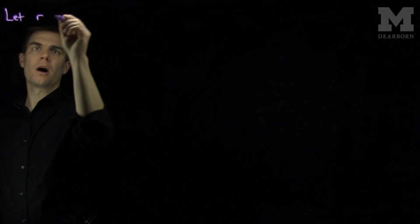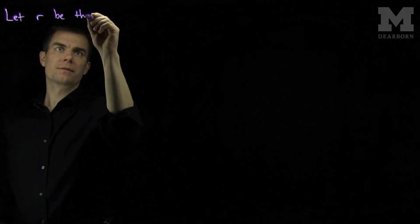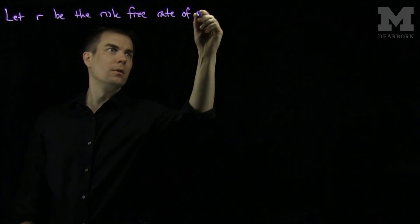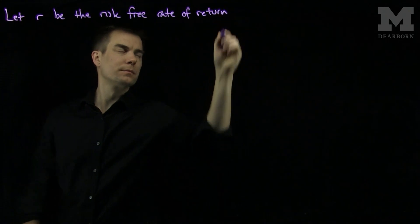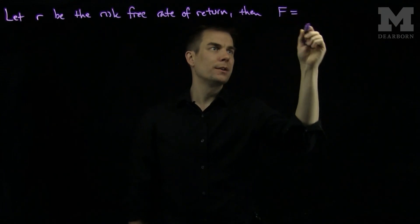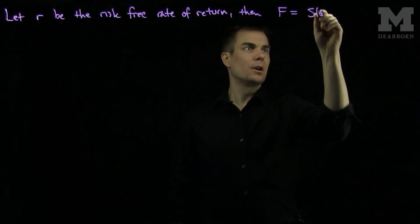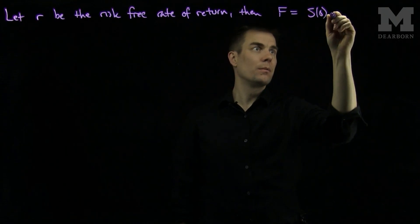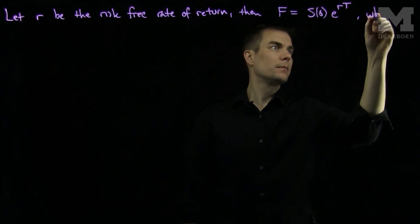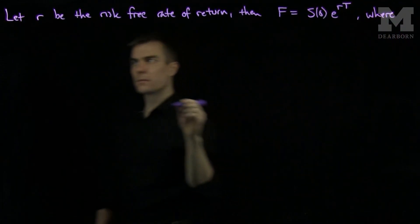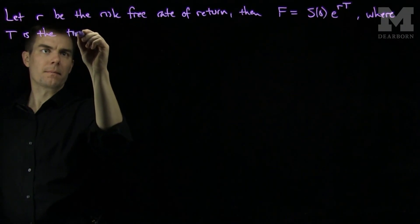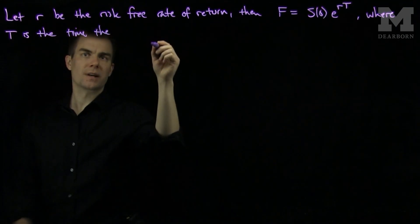We will let R be the risk-free rate of return. Then F, the forward price, must be S0, the stock price at time 0, times e to the RT, where T is the time the contract is executed.